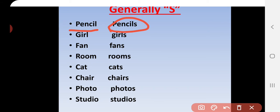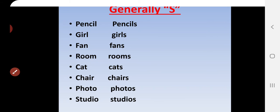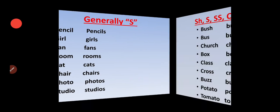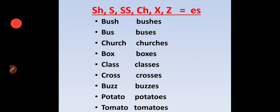Same way: girl becomes girls, fan becomes fans, room becomes rooms, cat becomes cats, chair becomes chairs, photo becomes photos, studio becomes studios. I hope you understand Rule 1. Let us see the second rule.